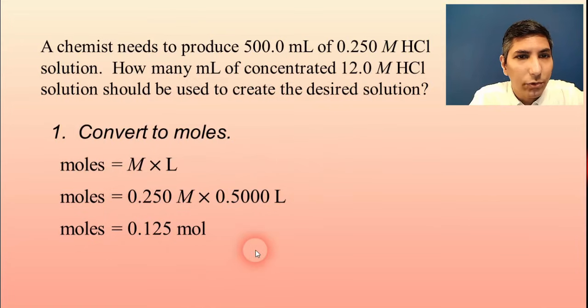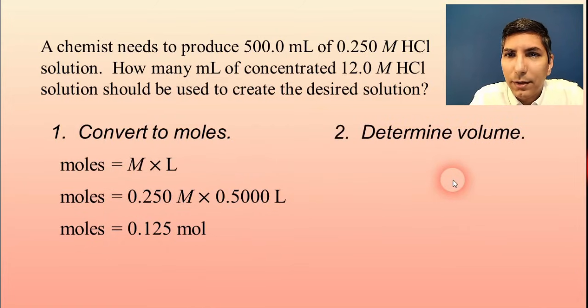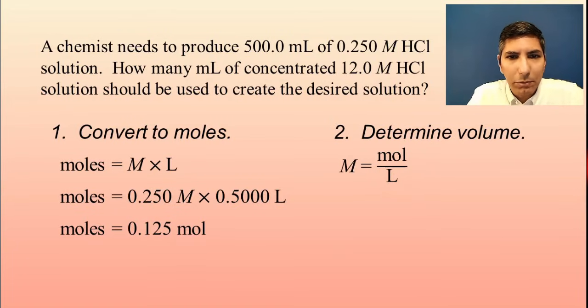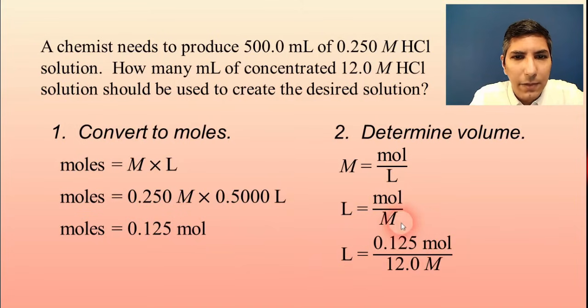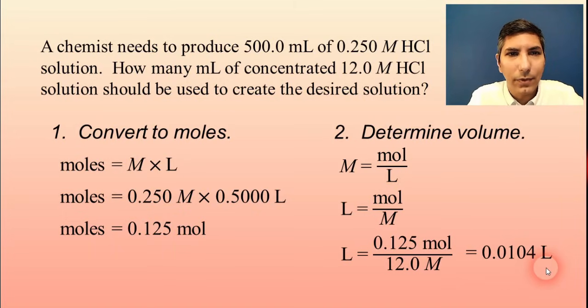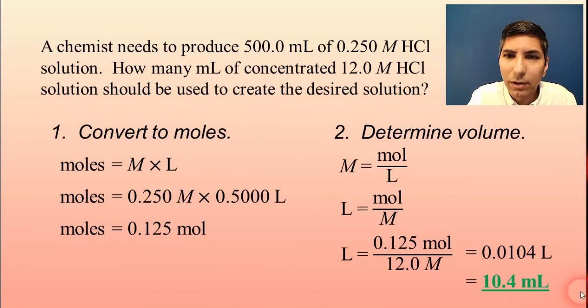When I do that, I find that I need 0.125 moles of the acid solution. So, with that, I'm going to take the moles, and I'm going to determine the volume. We know that molarity equals moles divided by liters. We can rearrange this equation, just using simple algebra, to where it looks like this: liters equals moles divided by the molarity. It's the same equation, just rearranged. Now, I'm trying to find the volume. The moles, well, we just calculated that, 0.125, and the molarity of our original solution is 12 molar. So when you divide that out, you get an answer of 0.0104 liters. Now, the question was, how many milliliters? So we have to multiply this by 1,000, and we get that it's 10.4 milliliters. So that's another type of problem with dilution.